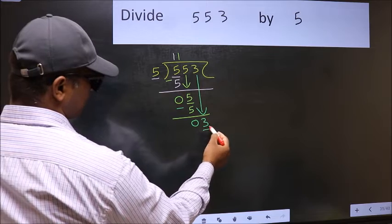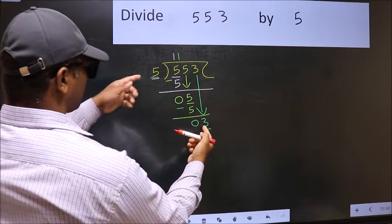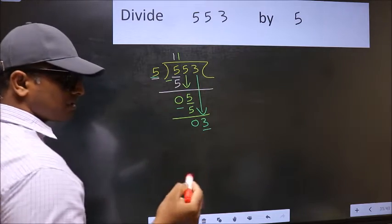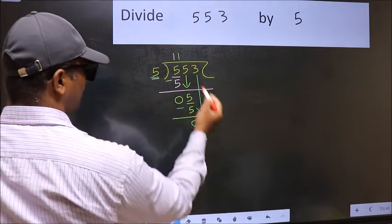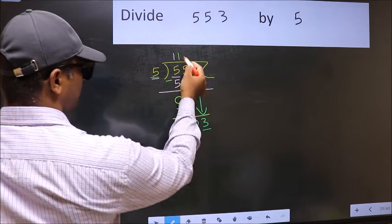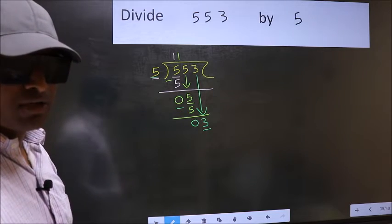Here we have 3, and here 5. 3 is smaller than 5. So what many do is they directly put dot and take 0. Which is wrong. Why is it wrong?